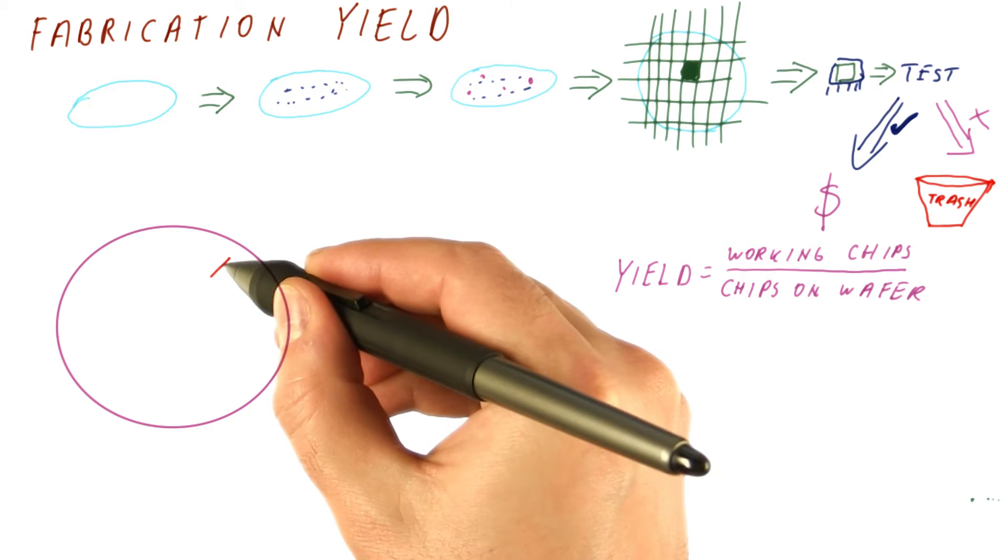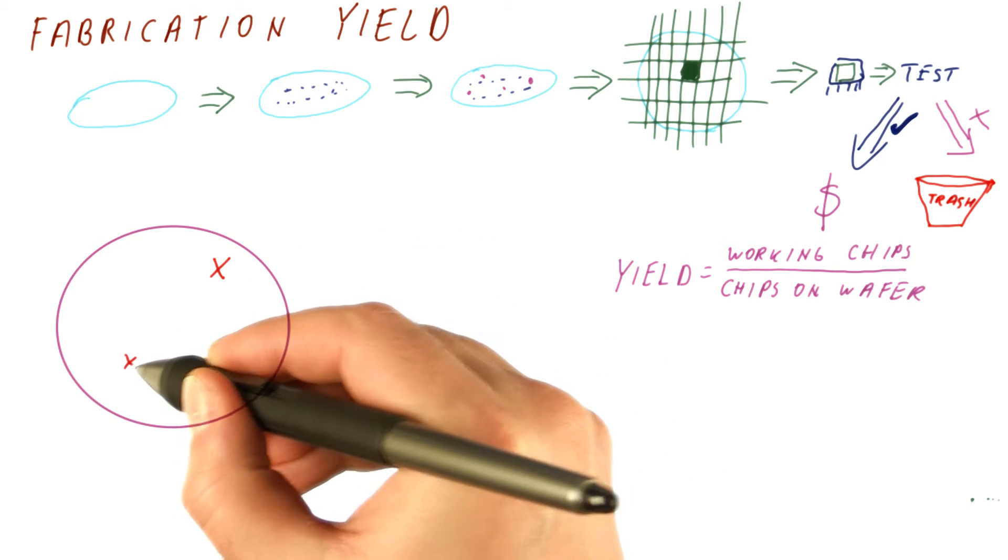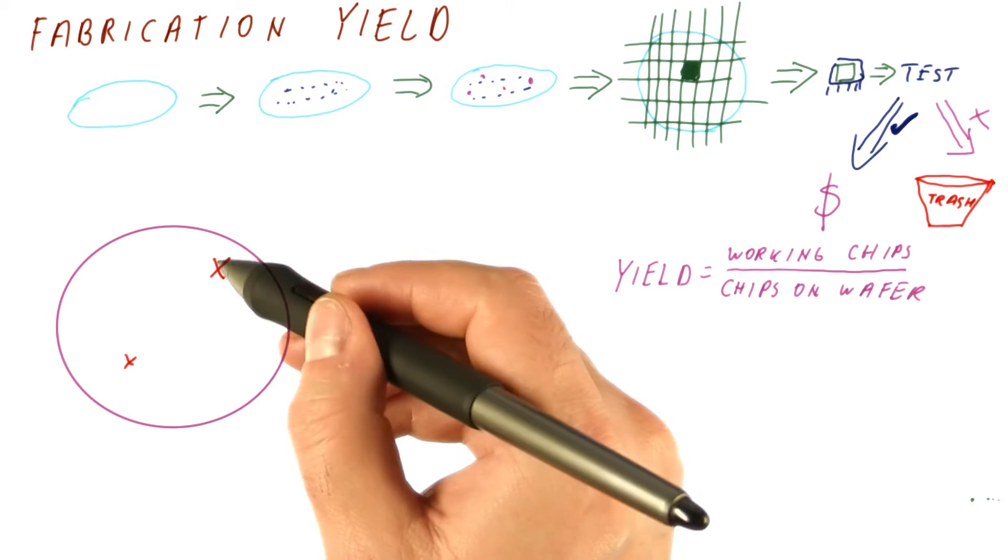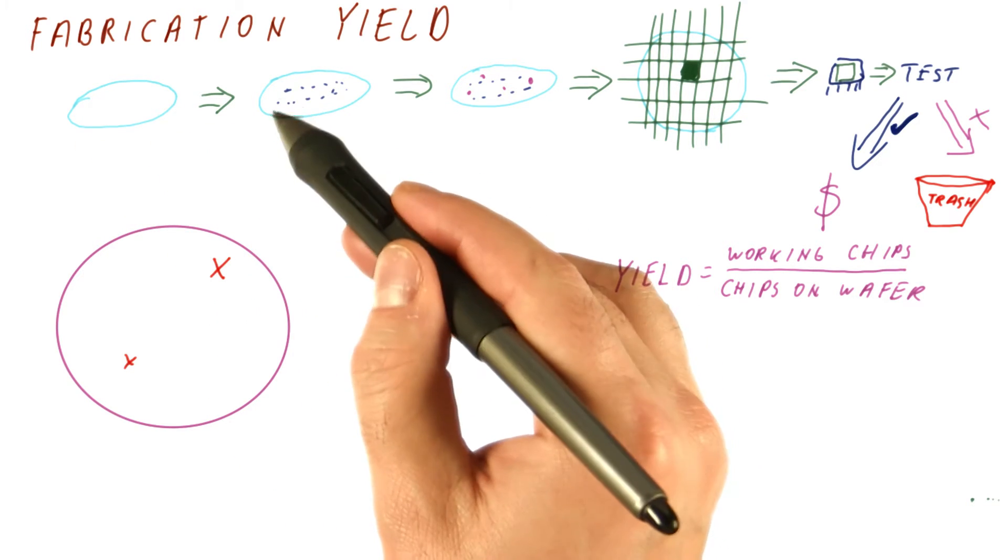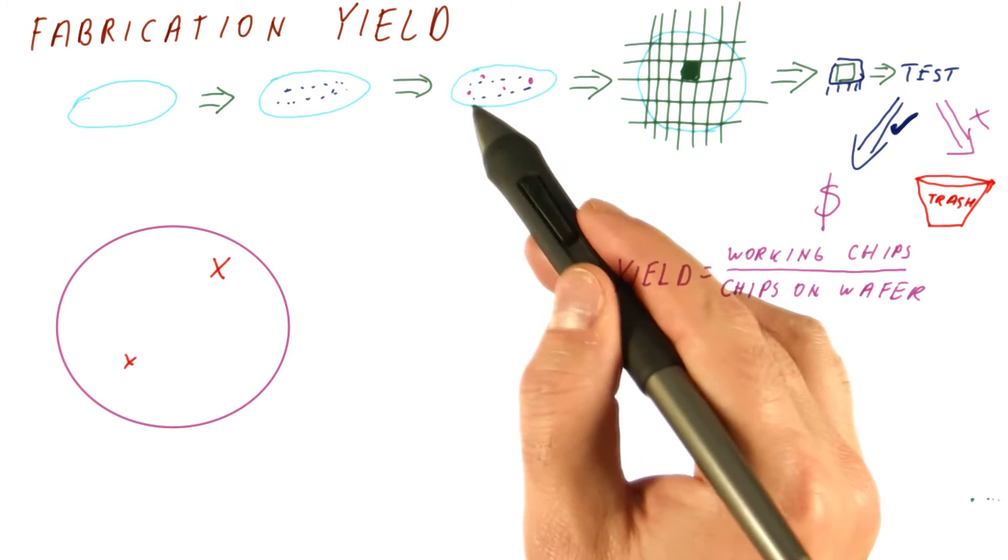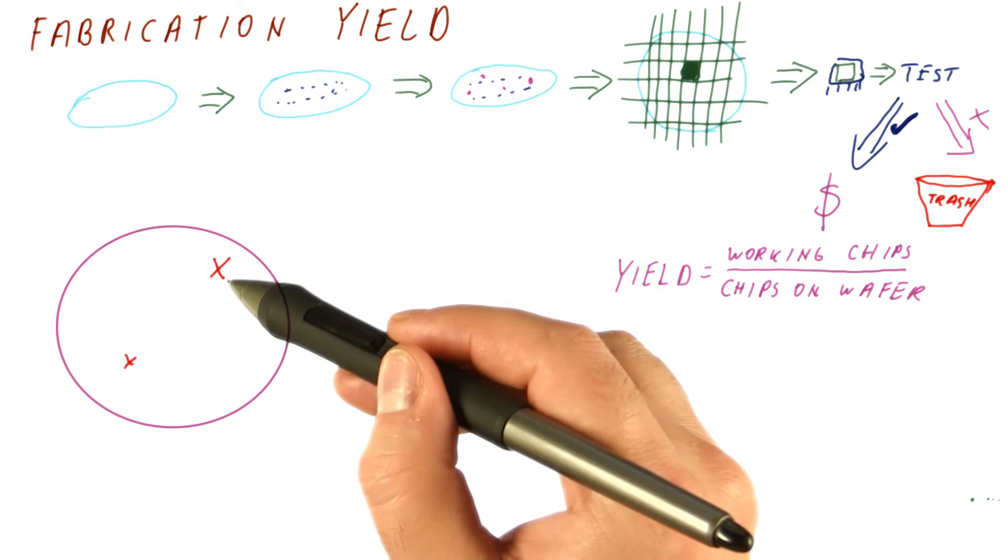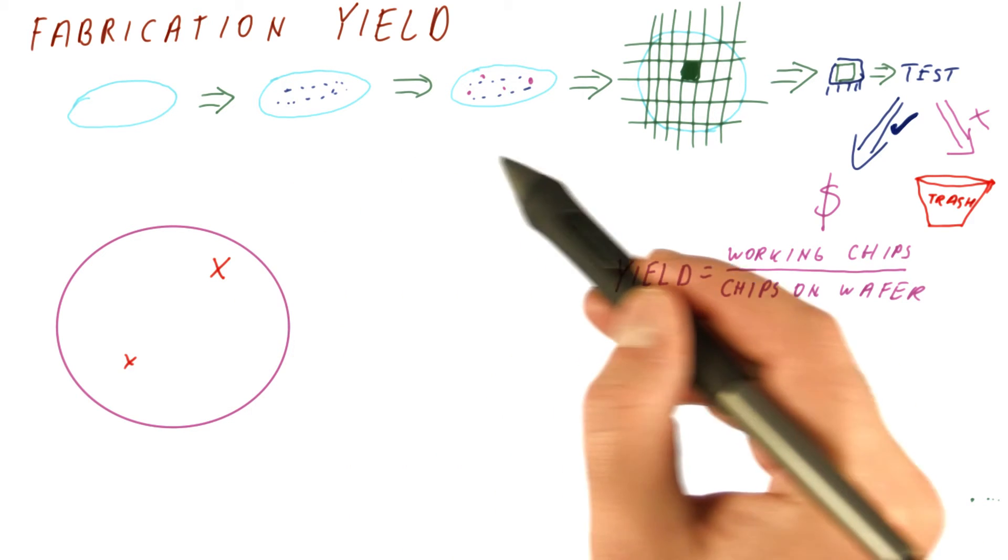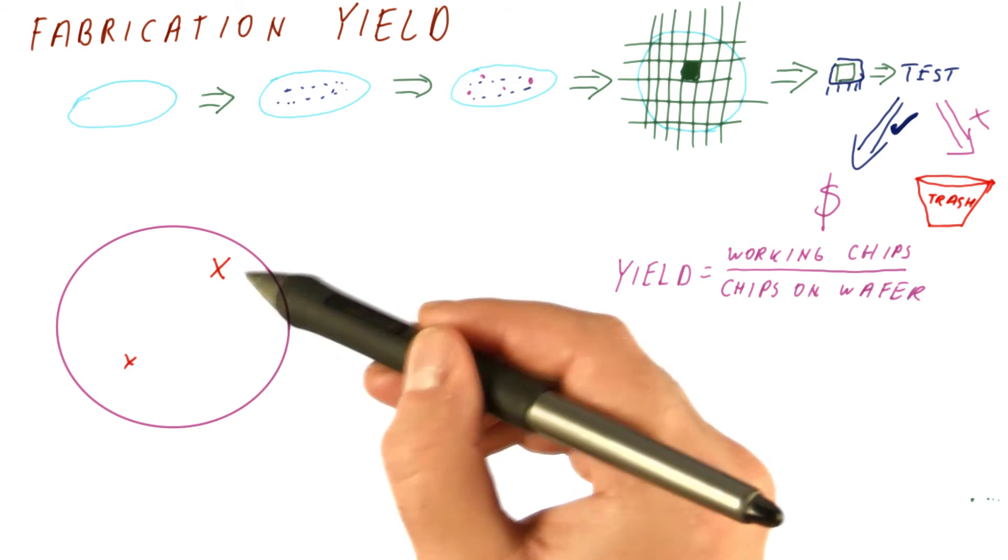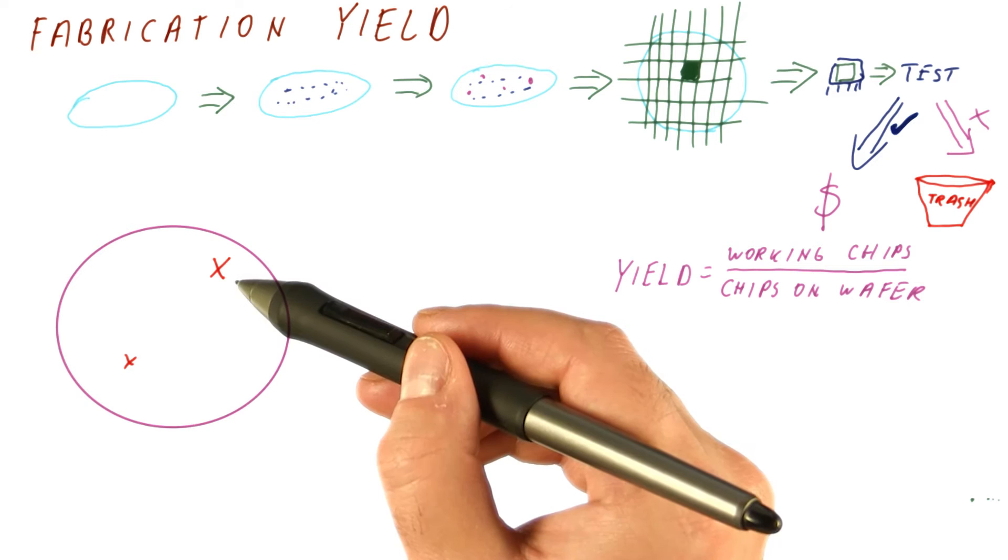The wafer typically has a few spots on it that we call defects. It is either because the silicon was impure to begin with, or because there was something wrong with the process at that place. In the end, once we get a manufactured wafer through a given manufacturing process, there will be some number of expected defects per wafer.